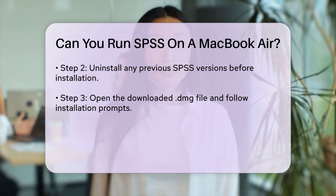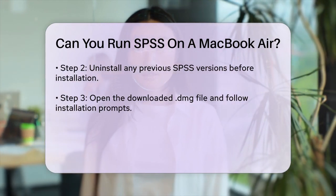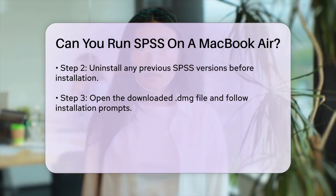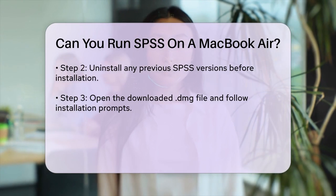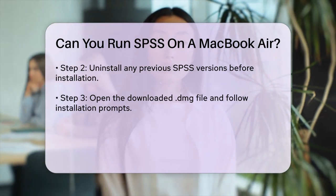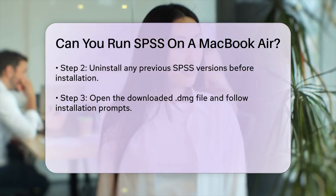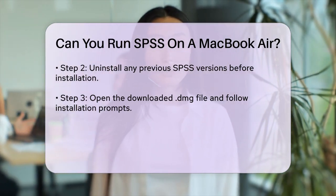Step 5: Activate the software. Enter the product code found in the Downloads section to activate your license. Ensure you're connected to an active network for this step.